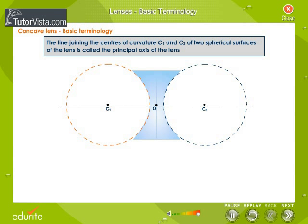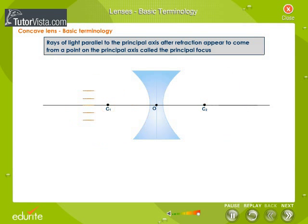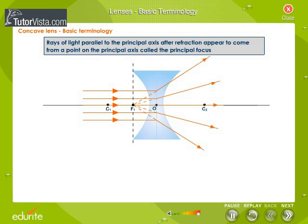The line joining the centres of curvature C1 and C2 of two spherical surfaces of the lens is called the principal axis of the lens. Rays of light parallel to the principal axis after refraction appear to come from a point on the principal axis called the principal focus.